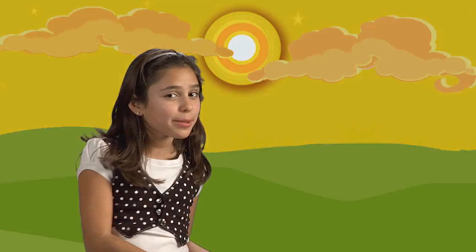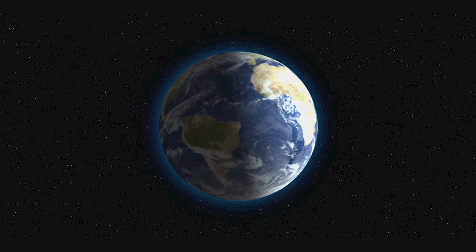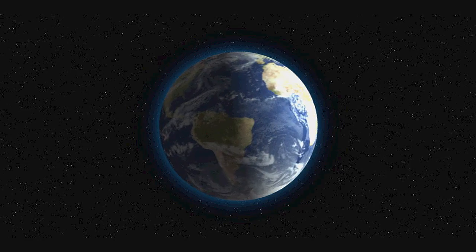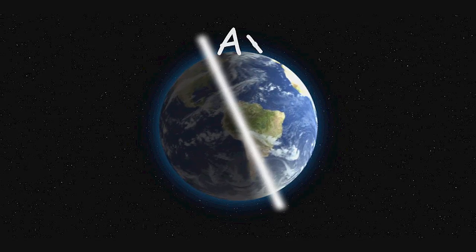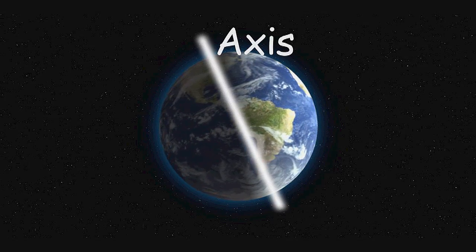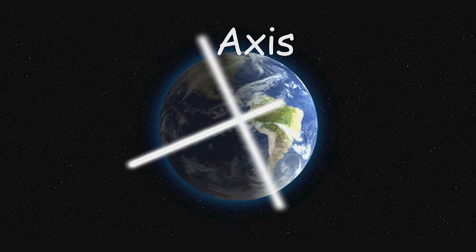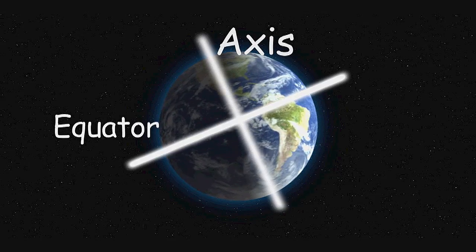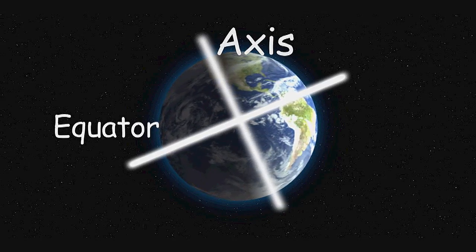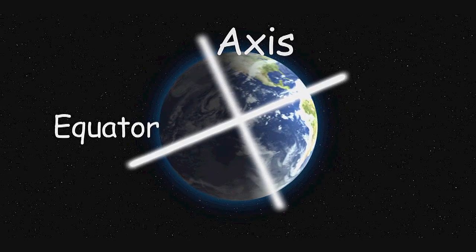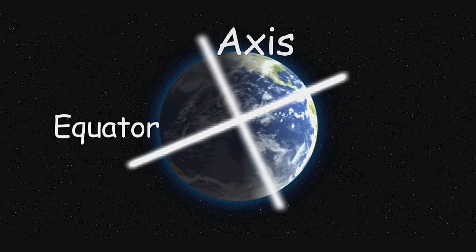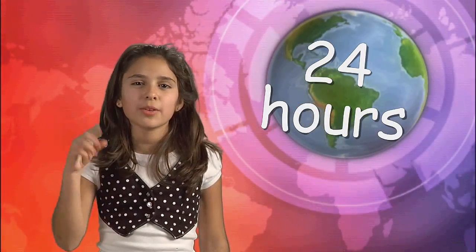Earth continually spins. We know this because we have daytime and we have nighttime. Earth spins on an imaginary line going from the North Pole to the South Pole. This line is called the axis. The Earth also has an imaginary line going through the middle of it called the equator. This divides Earth into the Northern Hemisphere and the Southern Hemisphere. As the Earth spins on its axis, some parts experience nighttime and some parts experience daytime. It takes 24 hours for the Earth to spin around one time. That's why there are 24 hours in a day.